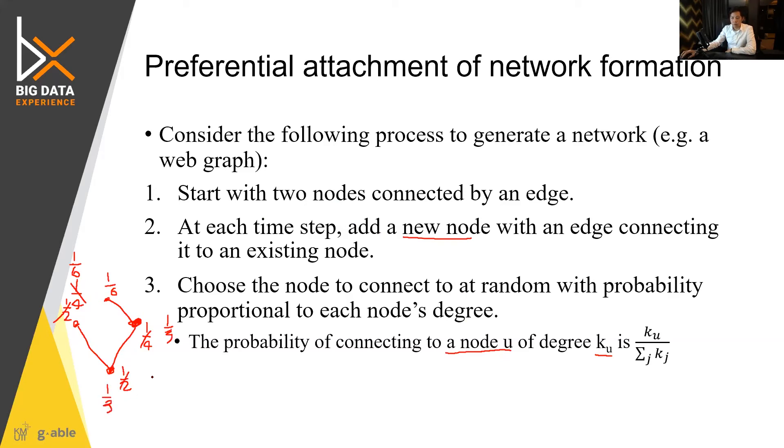Now new node coming in would likely be attached to suppose this one. And you can see that the hub would arise. You can write a program to simulate this. Or using NetworkX function to generate that.